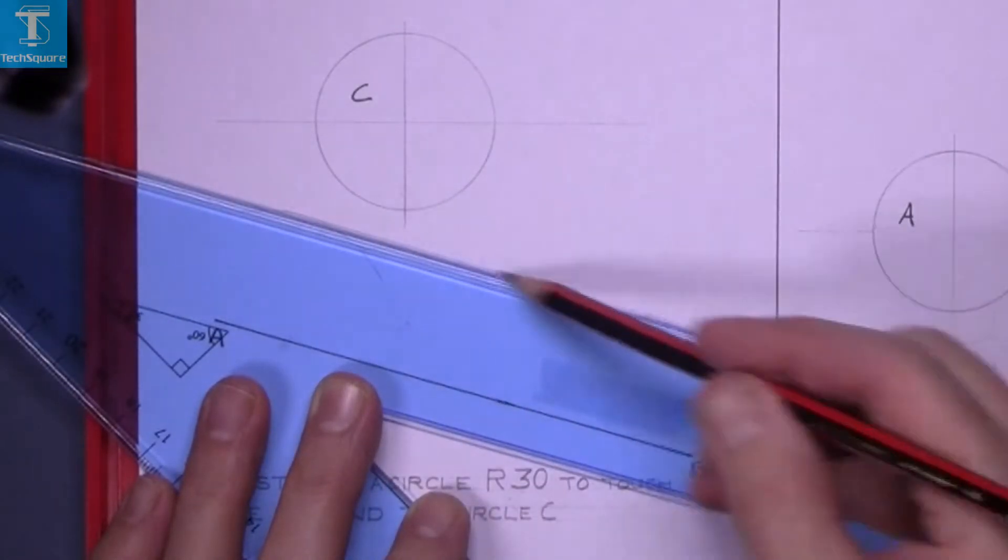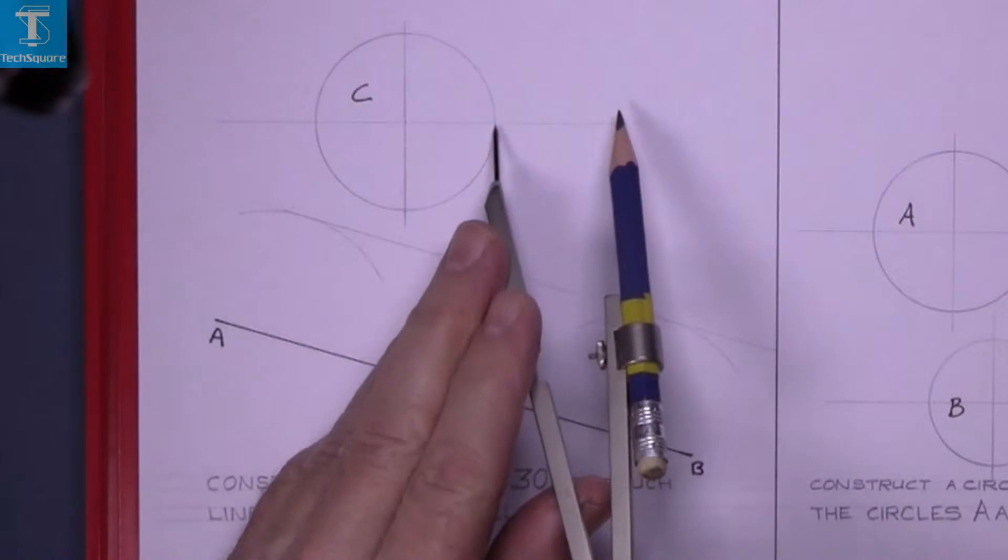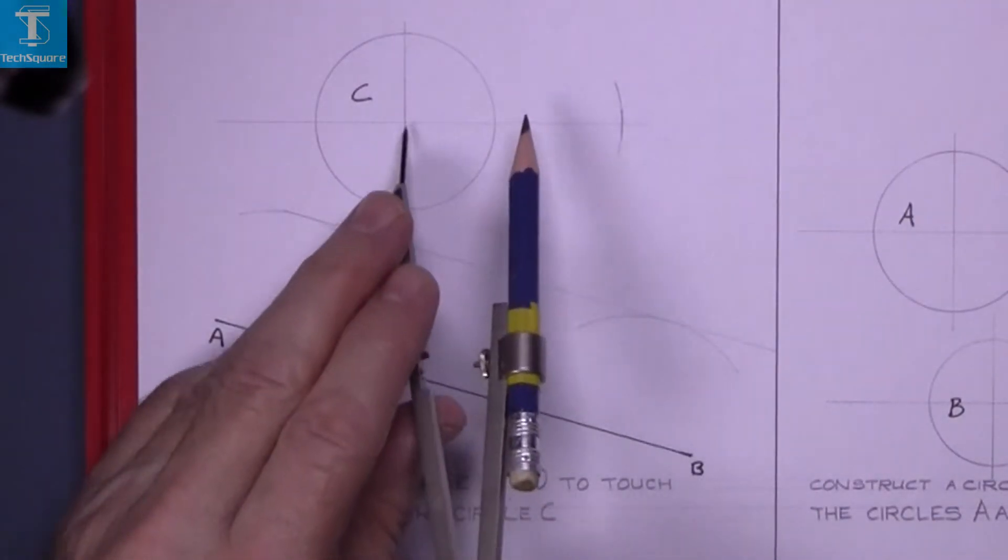Now that line will have gone through the center. Now add on the radius to the circle, so that's the 30 radius added on to circle C.